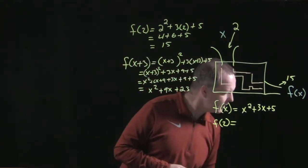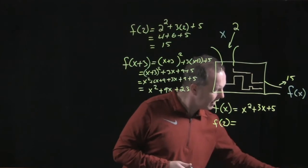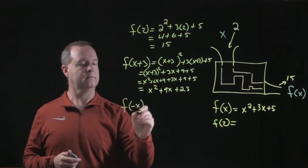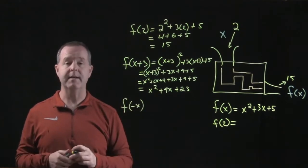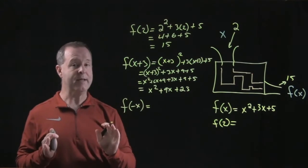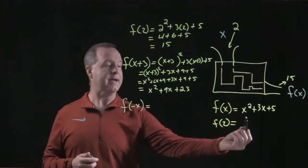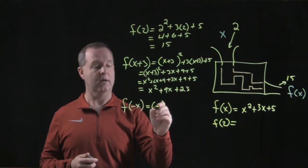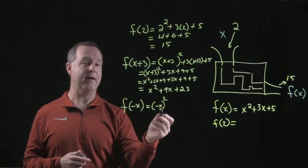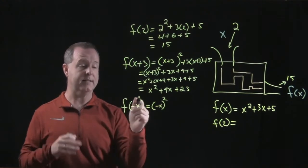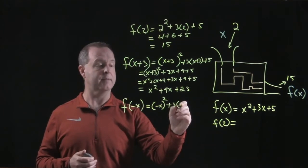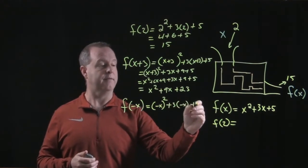And the last example I want to look at is f of negative x. Likewise we can put a negative value in as well. I need to be careful. Everywhere there's an x in my original function, I'm going to replace it with this variable. So it would be negative x, and make sure I'm going to put parentheses around it because it's the entire negative x that's being squared, plus 3 times negative x, plus 5.